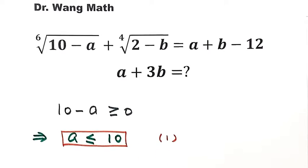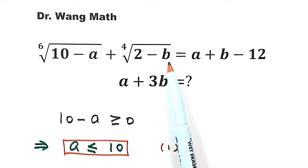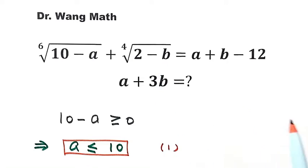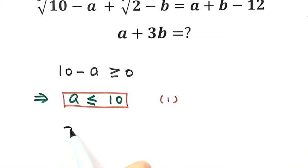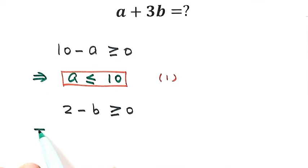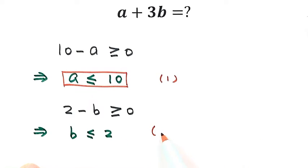Same here. Because the 4th root is an even number, the part under the root must also be bigger than or equal to zero. So that means 2 minus b is bigger than or equal to zero, which means b is less than or equal to 2. We label this as result 2.